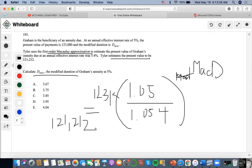So the first thing that we want to do is we want to solve for this, right? So what I'm going to do is I'm going to do 121,212 divided by 123,000 and get 0.9845463.